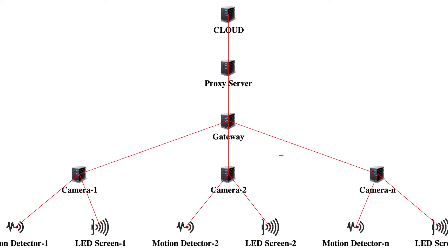Whenever a vehicle enters the parking premises, the motion detector fitted in parking slots gets activated and alerts the camera to click a picture of the vehicle. The picture is fully analyzed by a machine learning algorithm to check its state: firstly being parked, second already parked, and third leaving the parking area.